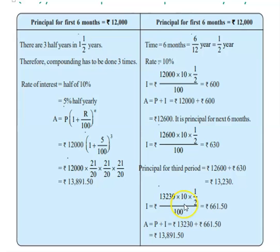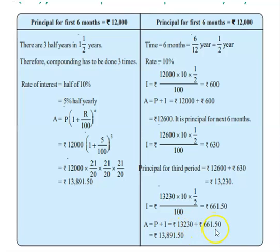Now for the third half year — because we have 3 half years: first, second, and third. The principal here is 13,230. Rate of interest is 10 into 1/2 divided by 100, so the interest will be 661.50. The amount will be principal plus interest: 13,230 plus 661.50 is totally 13,891.50. So in both cases, we are getting the same amount.